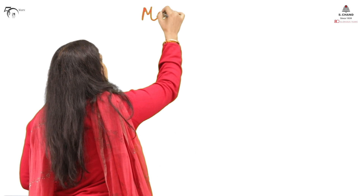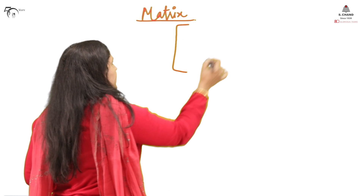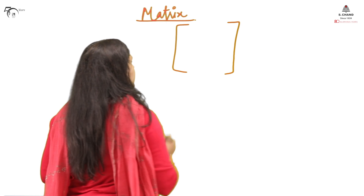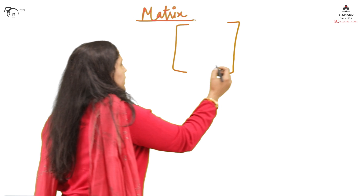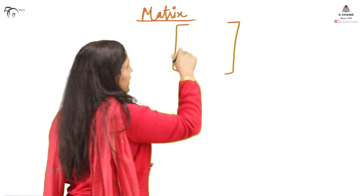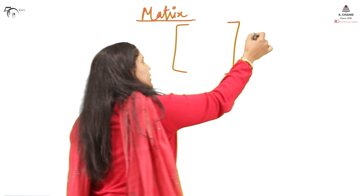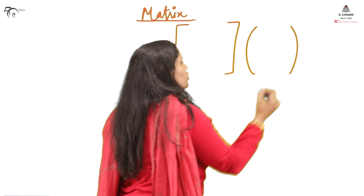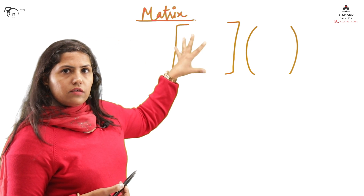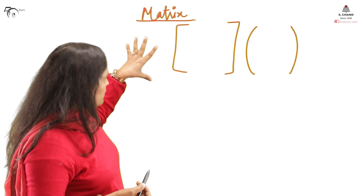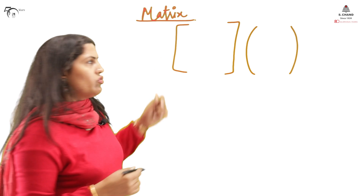What is a matrix? Starting with the very basic definition: a matrix is a rectangular arrangement of data, or elements. Every matrix is written in square parentheses — or we can write it in round brackets as well. These are the two notations for a matrix. If you see this type of box arrangement, that is a matrix.